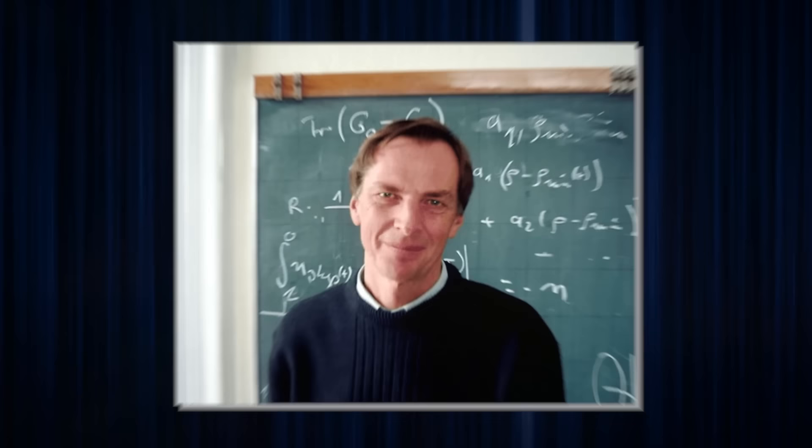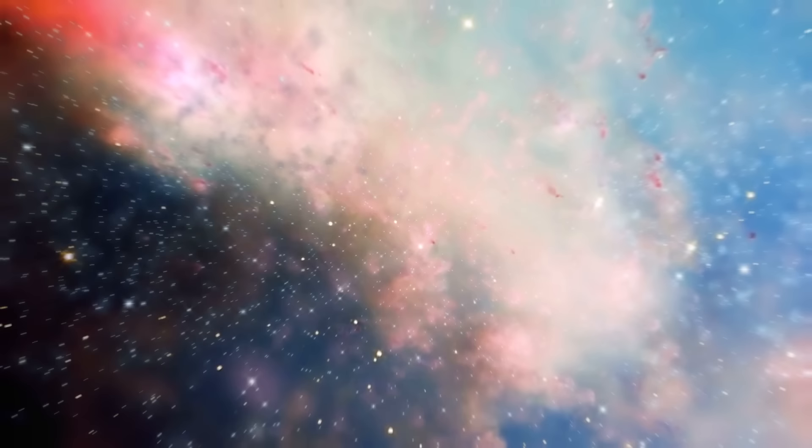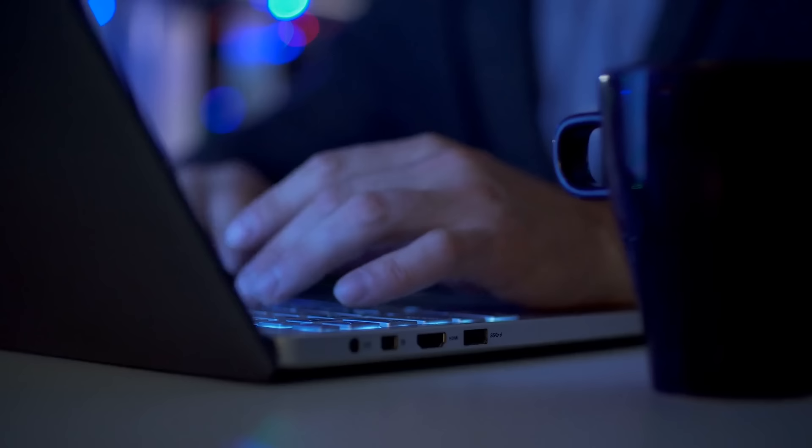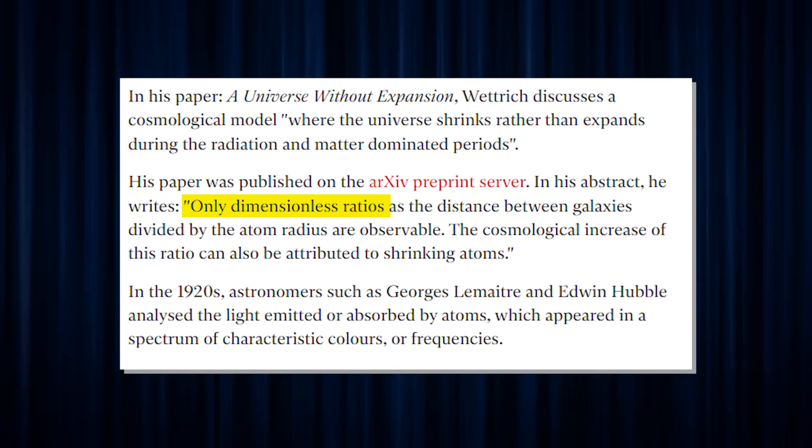In his paper, A Universe Without Expansion, Wetterich discusses a cosmological model, quote, where the universe shrinks rather than expands during the radiation and matter-dominated periods, end quote. His paper was published on the ARXIV preprint server. In his abstract, he writes, Only dimensionless ratios as the distance between galaxies divided by the axiom radius are observable. The cosmological increase of this ratio can also be attributed to shrinking atoms.